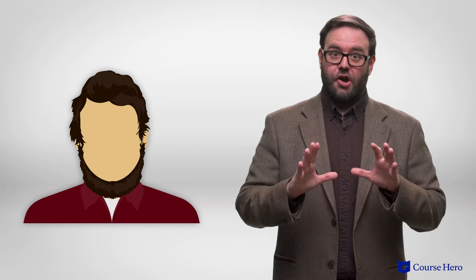Thoreau reveals some very human conflicts in this chapter. Like most people, he likes to eat. Like a good transcendentalist, he feels ashamed of himself for caring about food.